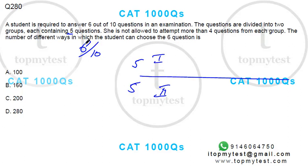So overall, 6 questions to answer. She is not allowed to attempt more than 4 questions in each group. The number of ways in which the student can choose the 6 questions is how many.